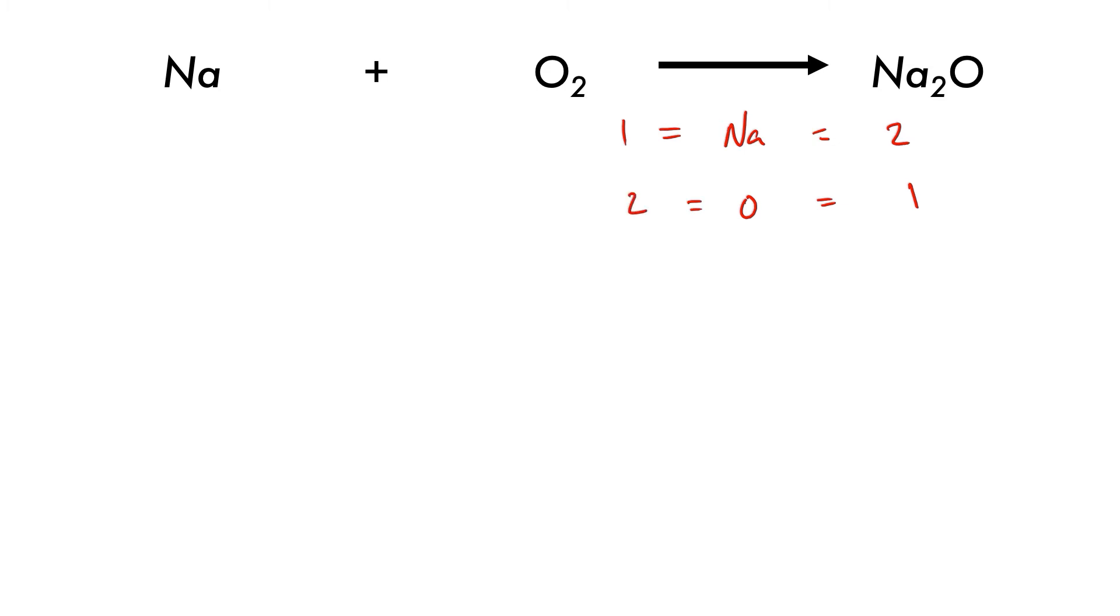Now, oxygen always comes as O₂, so there's always two oxygen molecules, which means that no matter what, on our product side we must have an even number of oxygen atoms.